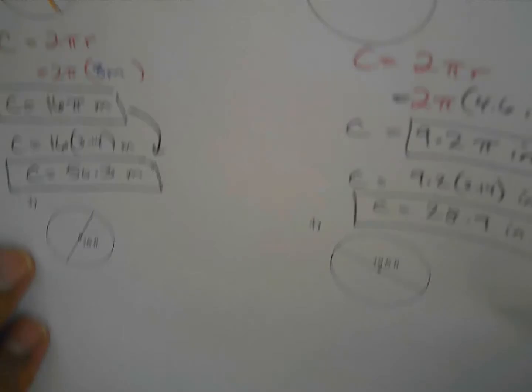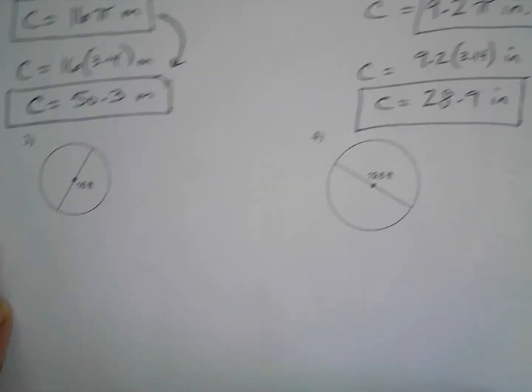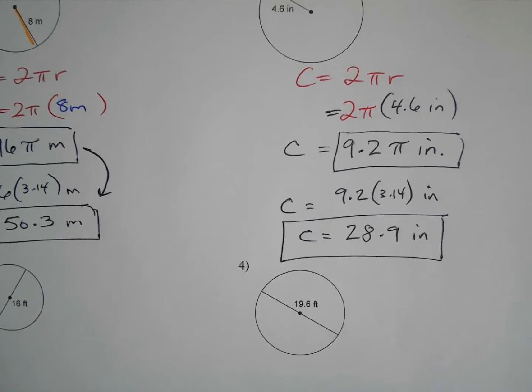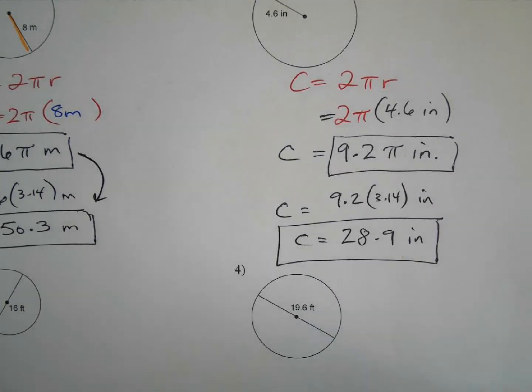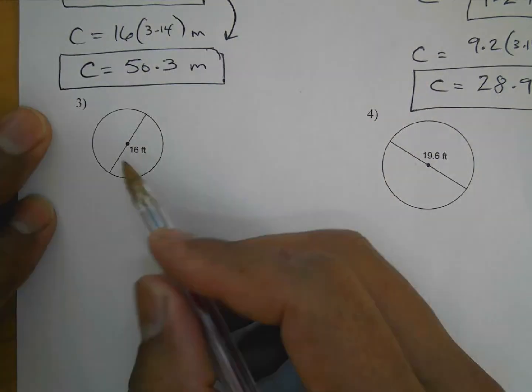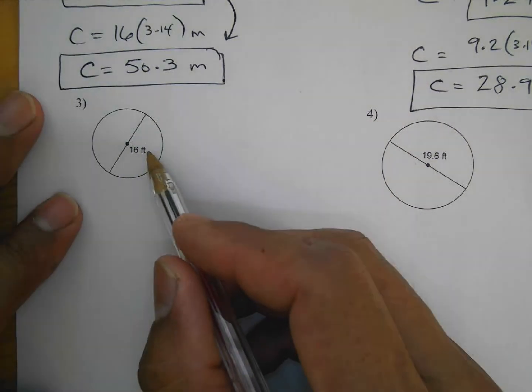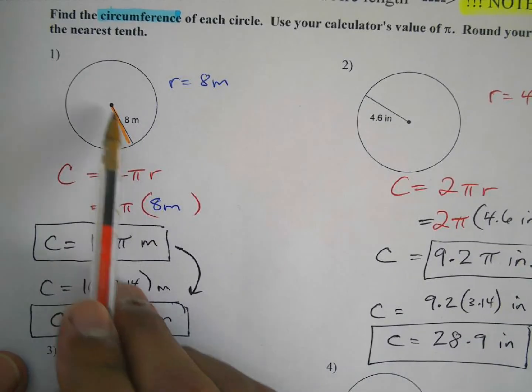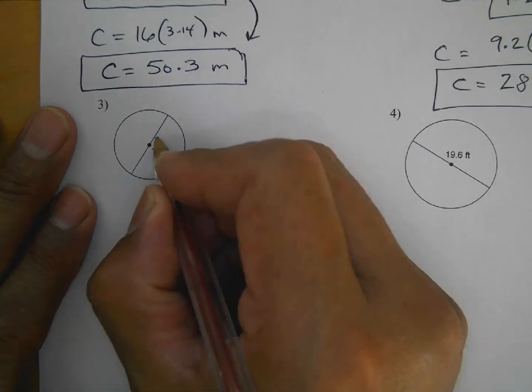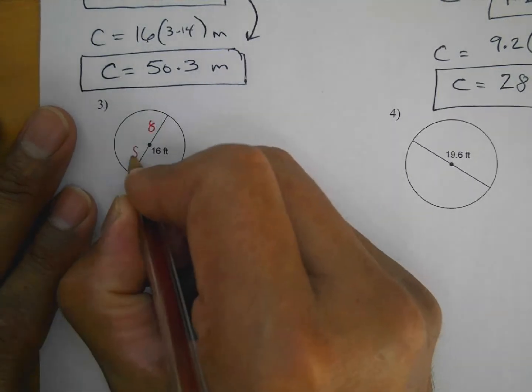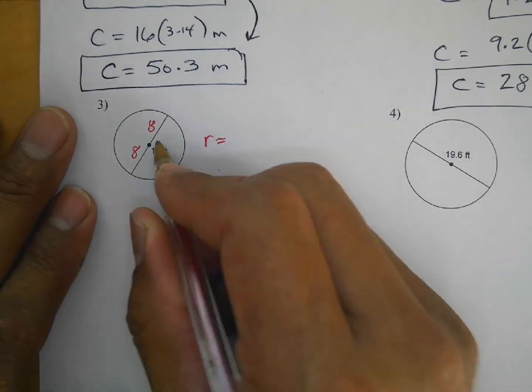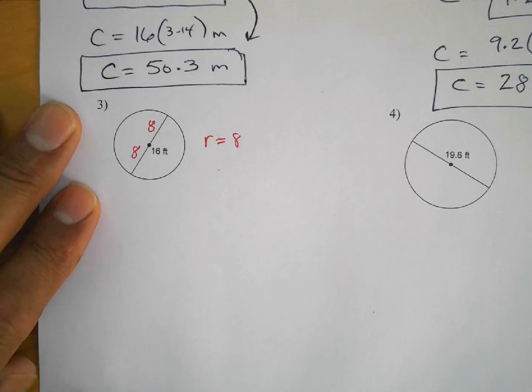All right, that was pretty easy. And how they're going to trick you to make it a little bit difficult is now look at number three. Again, remember, if you want to pause it or go back and rewind. Okay, number three. What's the difference here? They're not giving you, see, this is the diameter. Notice the difference. You've got to look at the picture. When it's like this, it's a radius. This is the diameter. So, if this is 16, then the radius would have to be 8 and 8. Half of it, because you divide it by 2. So, I know the radius is 8.